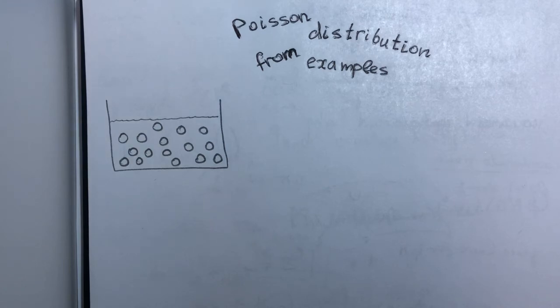When you study different probability distributions, either at school or at university, you're usually given definitions and formulas and then asked to apply them to solve certain problems. Almost never are you explained how those formulas came around and from what examples they were derived, which I'm going to do in this video.